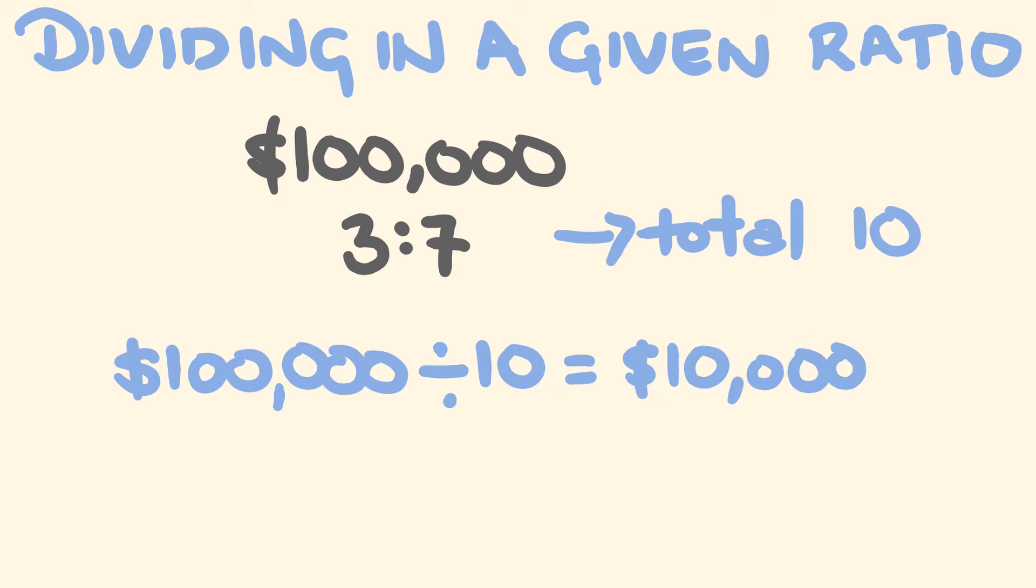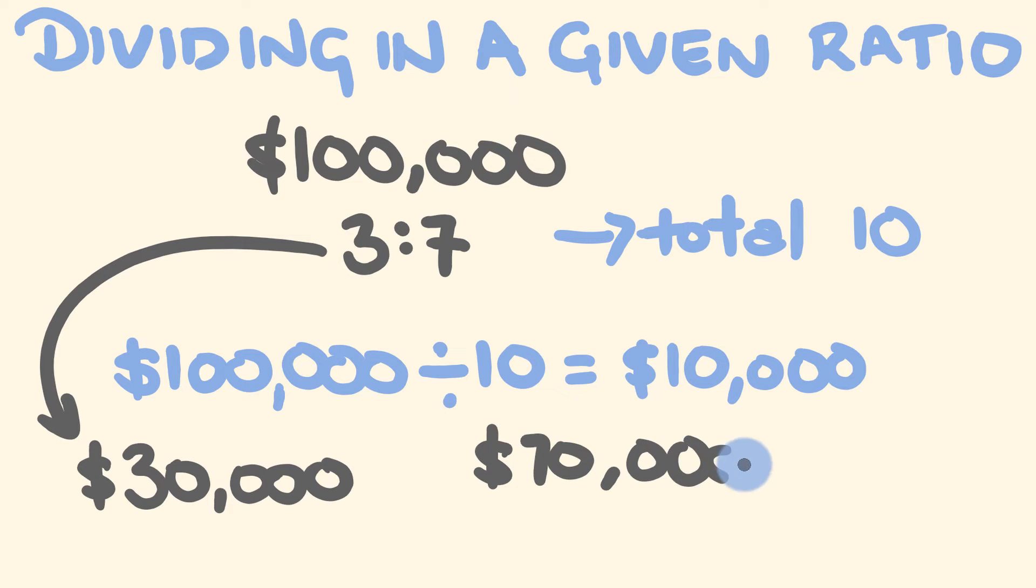We've got to divide it up into that given ratio. So one person is getting 3 parts. Each part is worth $10,000. 3 times $10,000, so one person is getting $30,000. Another person is going to be getting the 7 parts. 7 times $10,000 is $70,000. And that's the second part of our answer. So pretty simple, right? What about we do a few more?